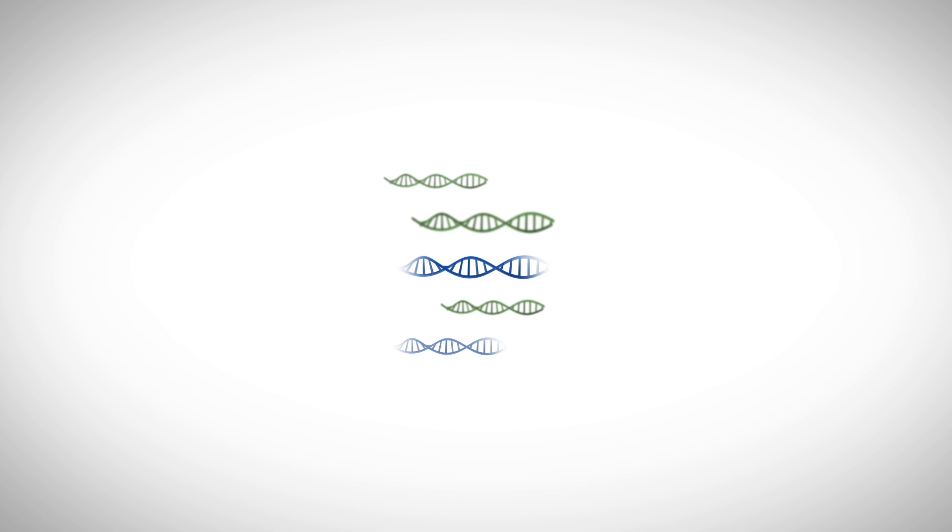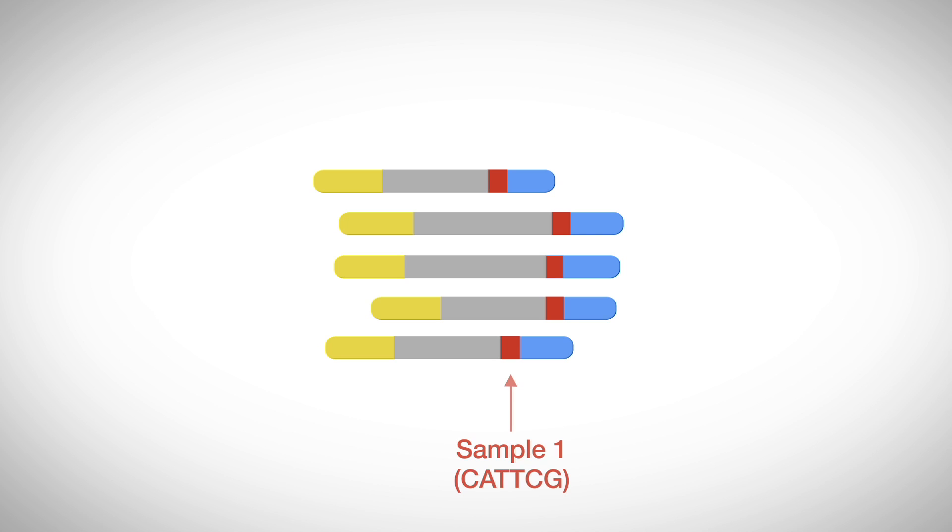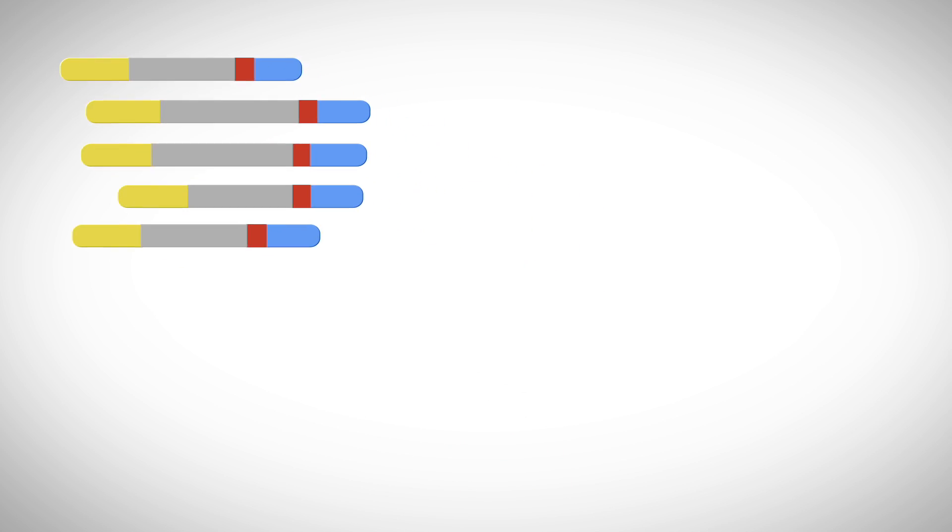This purified cell-free DNA is then used to prepare sequencing libraries. In addition to universal sequencing adapters, shown in yellow and blue, a sample-specific barcode, called an index, shown here in red, is attached to each cell-free DNA fragment.